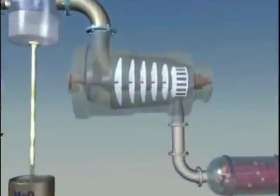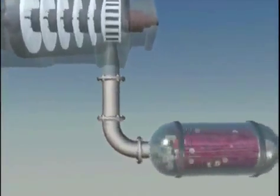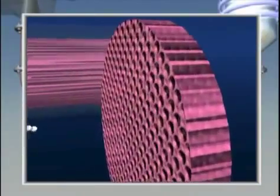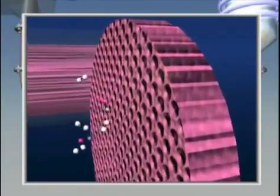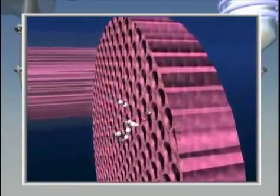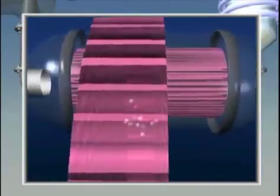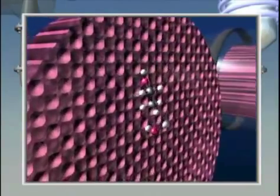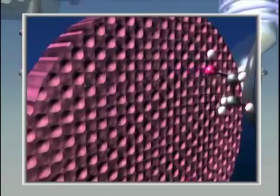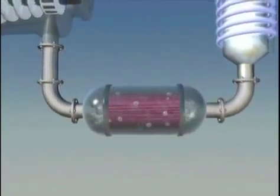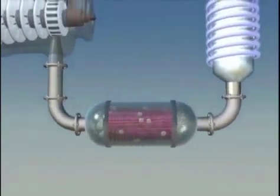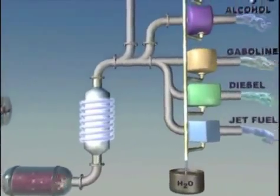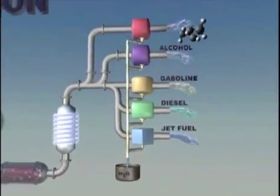The pressurized hot syngas is then passed over a catalyst to form a liquid. The catalyst is contained in a reactor and the syngas is passed through the reactor where the carbon monoxide and hydrogen molecules combine to form larger molecules. These molecules are subsequently cooled, condensed, and refined into clean renewable transportation fuels and other products.